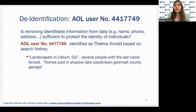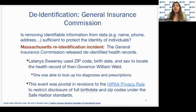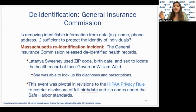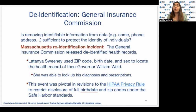This needs to be done in a very solidified way. For example, in the Massachusetts re-identification incident, a medical data record was released publicly which had the zip code, birthdate, and sex. This seemed like we were not giving out direct information about who the medical record belongs to, but a person named Latanya Sweeney used the zip code, birthdate, and sex to locate the medical record of the then governor, William Weld. This was a huge breach of privacy — his diagnosis reports, prescriptions, everything was available publicly. This event also led to pivotal revisions in the HIPAA privacy rule to restrict disclosure of full birthdates and